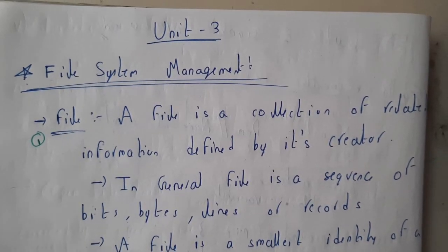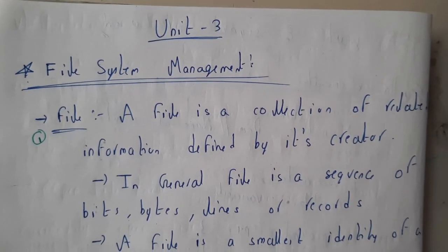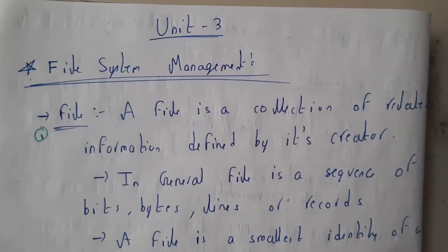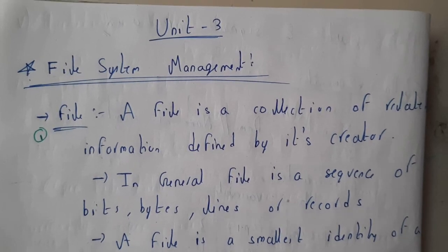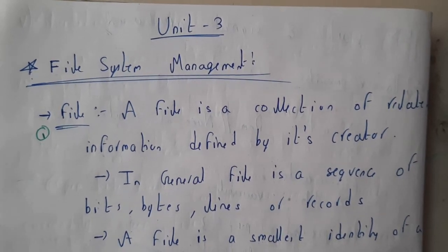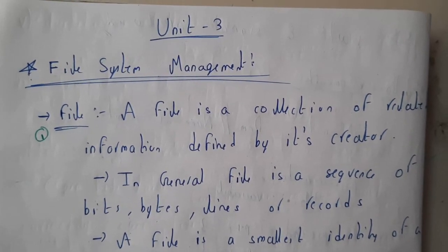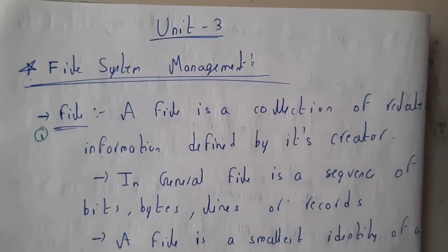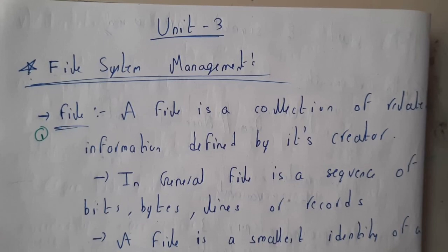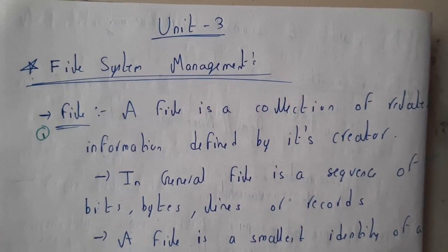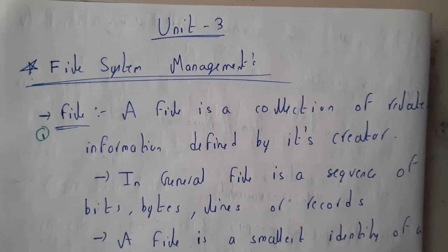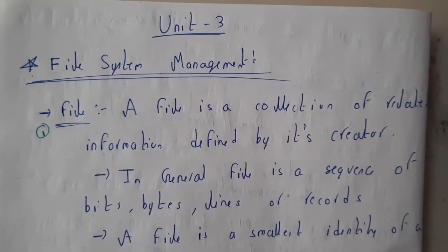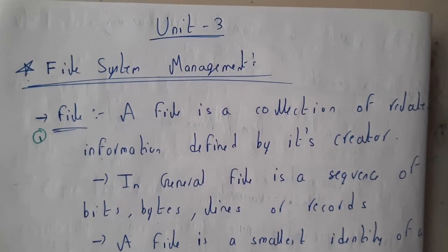Hello guys, we are back with our next unit. In this unit we'll be going through file system management — how files are allocated, how files are stored, and everything we'll be covering in this chapter. This is the third unit of operating system.